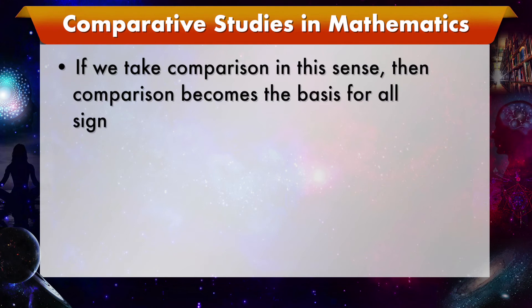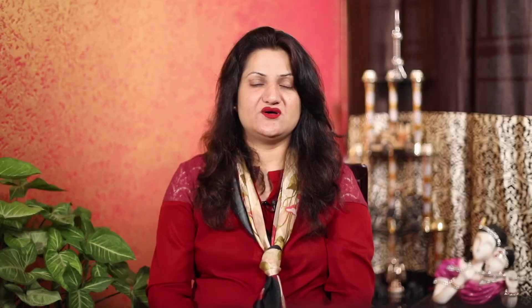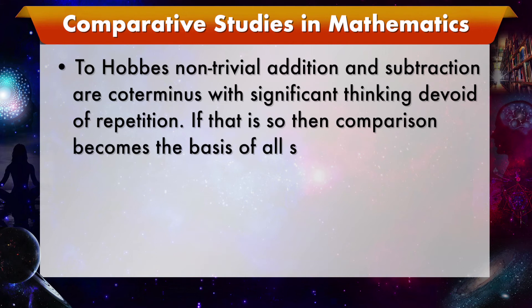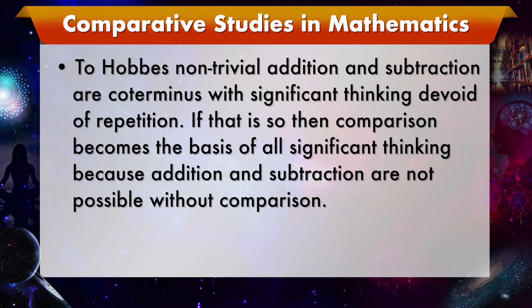If we take comparison in this sense, then comparison becomes the basis of all significant thinking. Due to the universality of the phenomena of addition and subtraction, all thinking, says Hobbes in the Leviathan, is nothing but reckoning — that is, adding and subtracting. Hobbes goes on to say: in whatsoever matters there is a place for addition and subtraction, there is a place for reason; and where these have no place, reason has nothing at all to do. Non-trivial addition and subtraction are coextensive with significant thinking devoid of repetition. If that is so, then comparison becomes the basis of all significant thinking, because addition and subtraction are not possible without comparison.